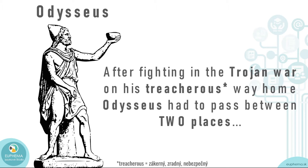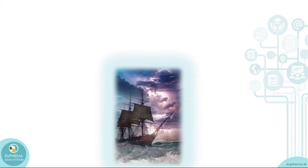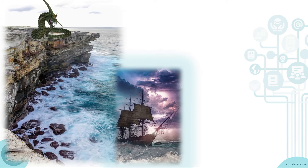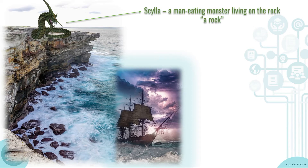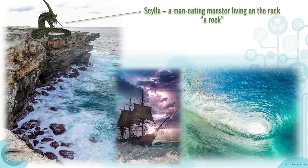He had to pass between a rock on which lived a horrible monster. Its name, according to the story, was Scylla, and it was a man-eating monster living on the rock. That's why in the idiom we say 'between a rock' — the rock represents this dangerous, monstrous place.